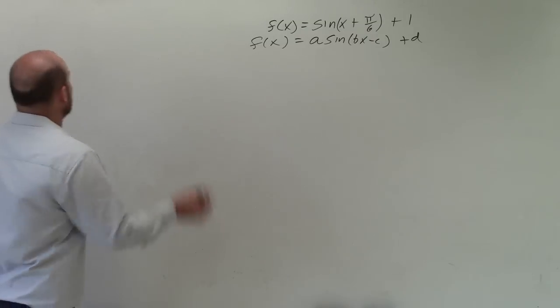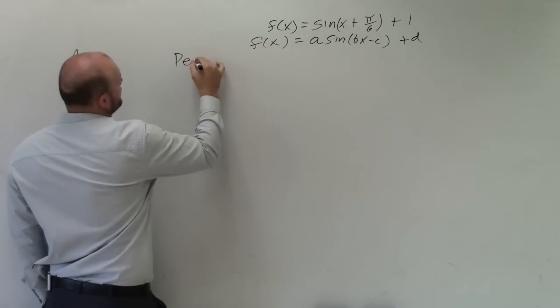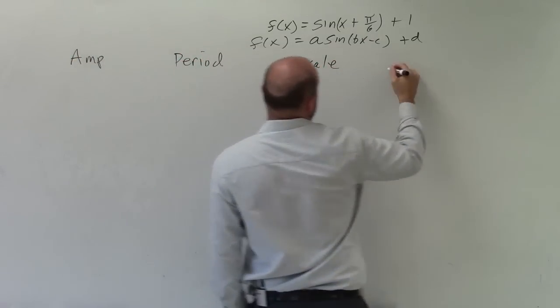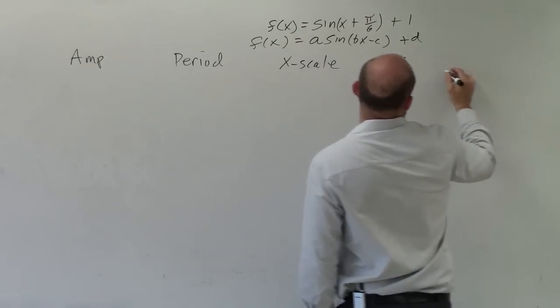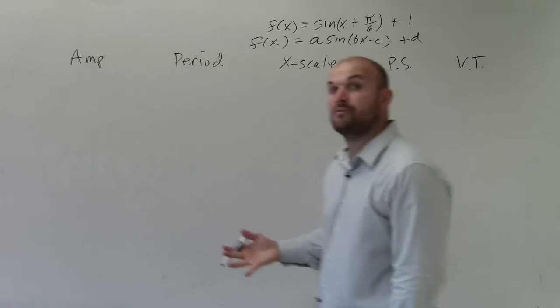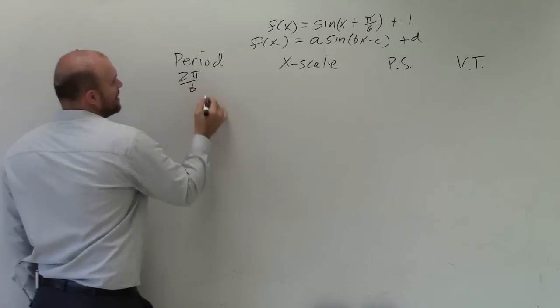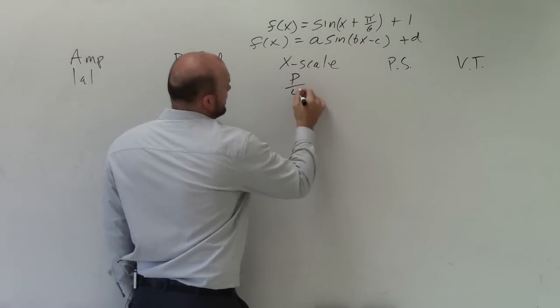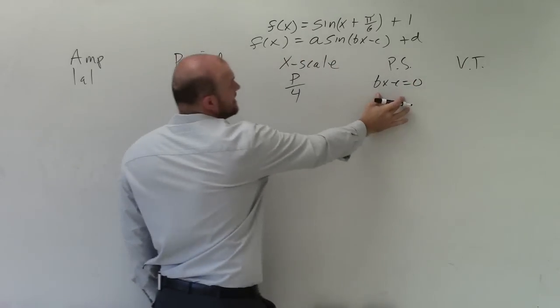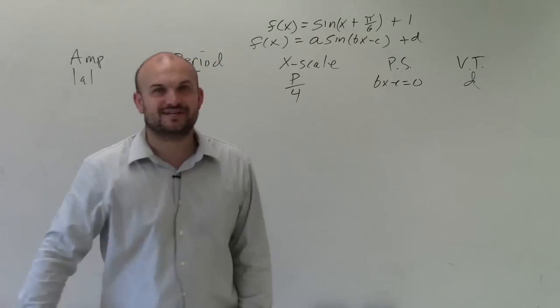So what we want to do to solve for sine is figure out the amplitude, the period, the x scale, the phase shift, and the vertical transformations. The amplitude is the absolute value of a. The period is 2 pi divided by b. X scale is the period divided by 4. Phase shift is bx minus c equal to 0. Whatever's inside your parentheses, set equal to 0. And your vertical transformation is d.